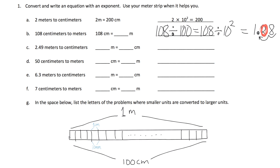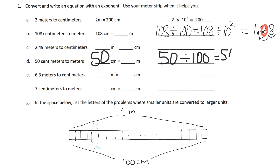Let's do question D, which says 50 centimeters to how many meters. First, we're going to put in 50 centimeters. In order to go from centimeters to meters, since meters are much bigger than centimeters, we're going to have fewer meters. That means we're going to have to divide by 100. So that's going to be 50 divided by 100, but really what they want us to show is 50 divided by 10 squared, and that gives us 0.5.